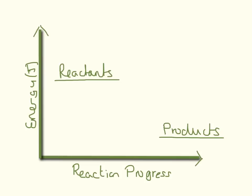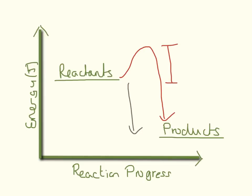You might be wondering what that hump in the graph is. Instead of just drawing our graph like that, something happens which means we have to have this hump in. And this difference from here to here is called the activation energy. The activation energy is just the energy that it needs to get started — like when you wake up in the morning, it's really hard to get out of bed. That first getting out of bed bit is sometimes the hardest bit. That's the activation energy.